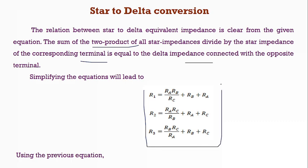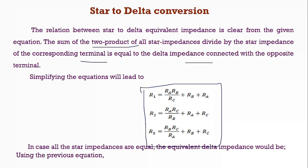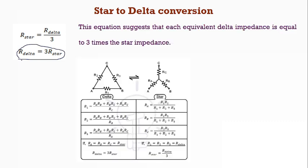This can be simplified like this also. So, if you are going to have similar value of resistance in case of the star, the delta equivalent is going to be thrice that of the star resistances. Here, for your easy understanding, the conversion between delta to star and star to delta is being given for reference. Hope you understand this session. Thank you.